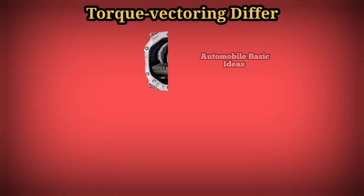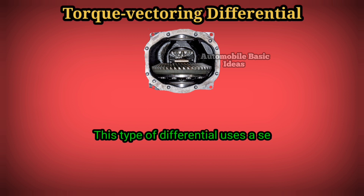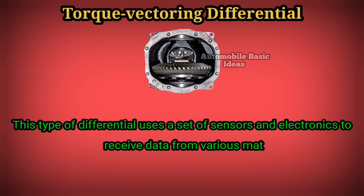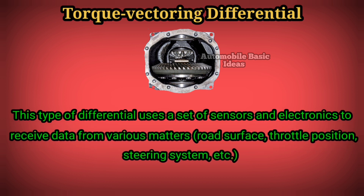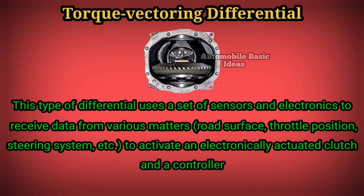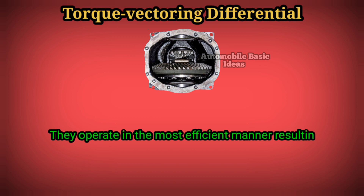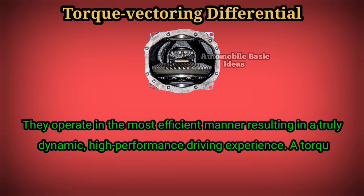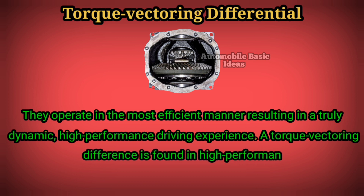A torque vectoring differential uses a set of sensors and electronics to receive data from various inputs — road surface, throttle position, and steering system — to activate an electronically actuated clutch and a controller. They operate in the most efficient manner, resulting in a truly dynamic, high-performance driving experience.